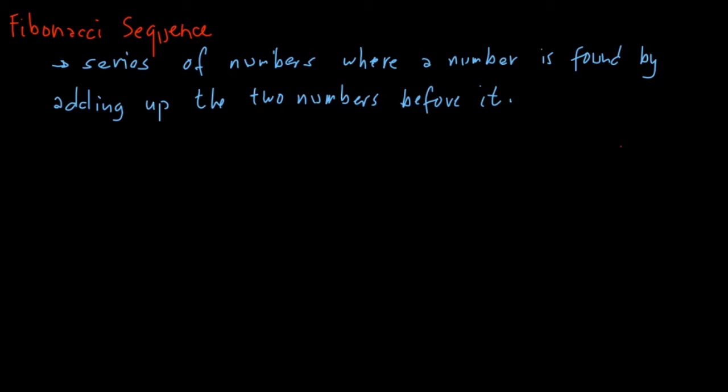For example, our first term is zero and our second term is one. If we add these two—zero plus one—we get one. That's how we get the next term: we add the two numbers before it.